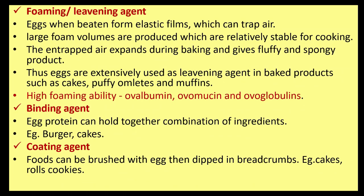Foaming/leavening agent: when eggs are beaten they form elastic films which trap air. Large foam volumes are produced which are relatively stable for cooking, and the entrapped air expands during baking, giving a fluffy and spongy product. Eggs are extensively used as leavening agents in baked products such as cakes, puffy omelets, and muffins. High foaming ability comes from albumin, ovomucin, and ovoglobulins.